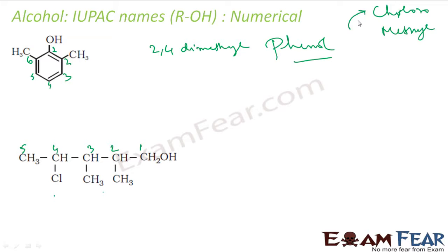Alphabetically, C comes first, so it is 4-chloro-2,3-dimethyl. The longest chain has five carbons: pentanol. Since OH is attached to the first carbon, you can also call it 4-chloro-2,3-dimethylpentan-1-ol.